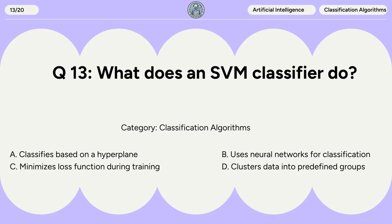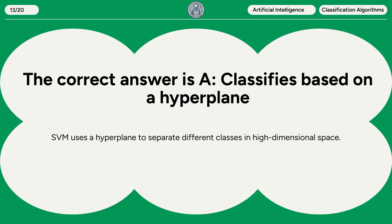Question 13. What does an SVM classifier do? A. Classifies based on a hyperplane. B. Uses neural networks for classification. C. Minimizes loss function during training. D. Clusters data into predefined groups. The correct answer is A: classifies based on a hyperplane. SVM uses a hyperplane to separate different classes in high-dimensional space.